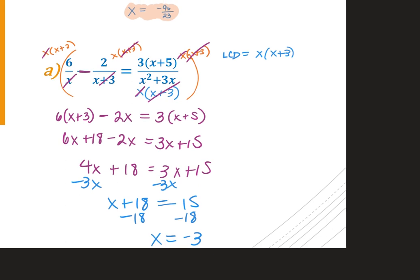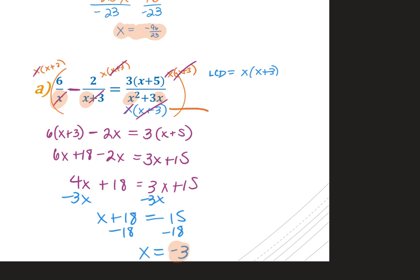Subtracting 3x: x + 18 = 15; subtracting 18 gives x = −3. Because there are fractions with variables in the denominators in the original equation, I have to check this answer. I can either plug −3 back in or establish domain restrictions upfront: x cannot equal 0 (not a problem), but x cannot equal −3 because that gives zero in the denominator x + 3. So x = −3 is an extraneous root and there is no solution.